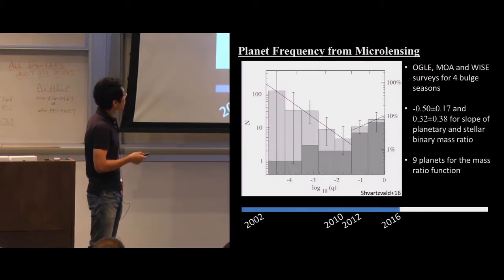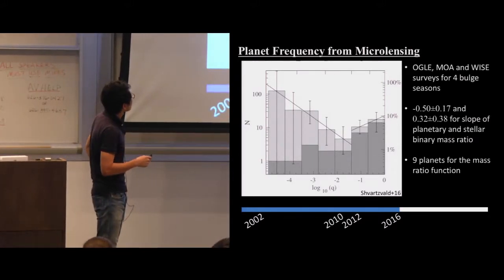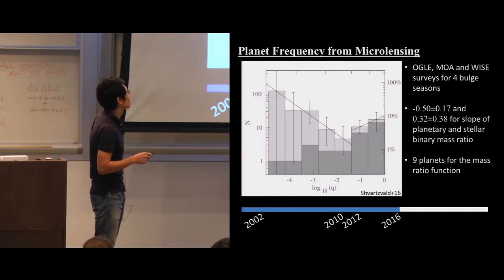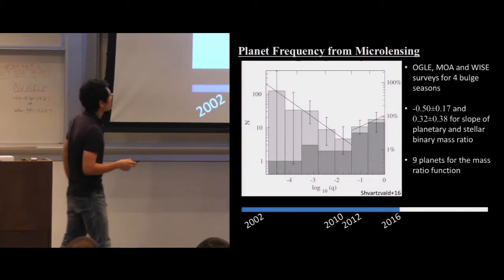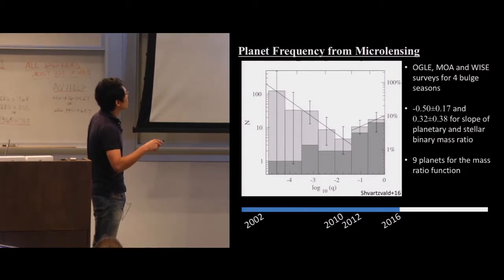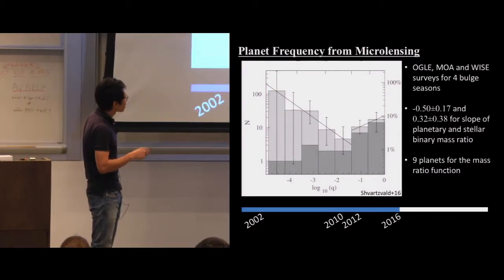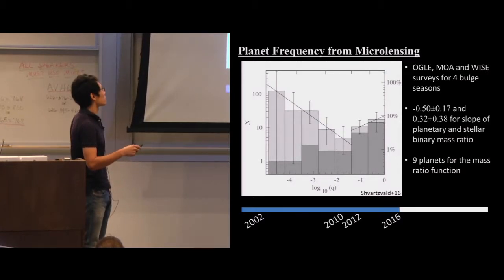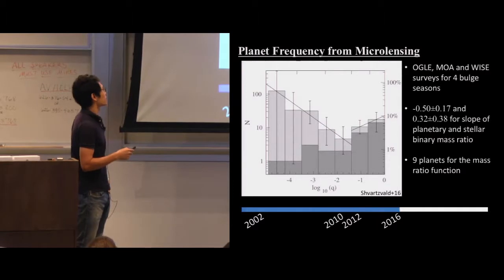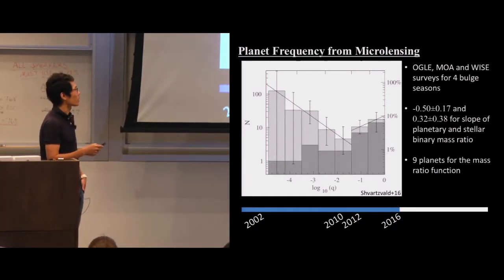Another result from the second-generation microlensing survey is the mass ratio function extended to include stellar binary companions. The slope uncertainty is large (0.3 ± 0.4), but they find a minimum in companion frequency at a mass ratio of ~0.04. This can be explained by different formation mechanisms: core accretion for planets versus molecular cloud collapse or disk instability for stellar binaries and brown dwarfs.